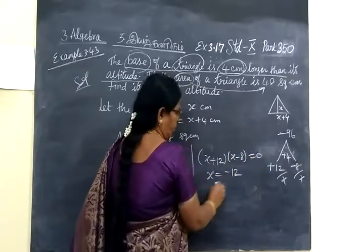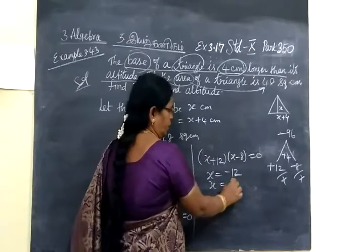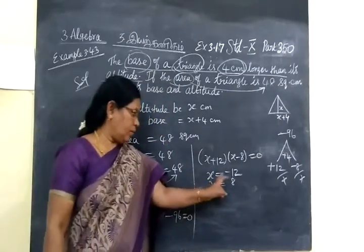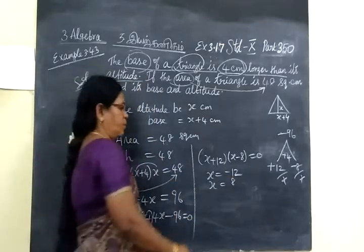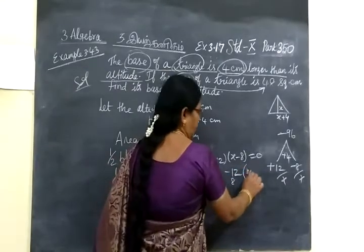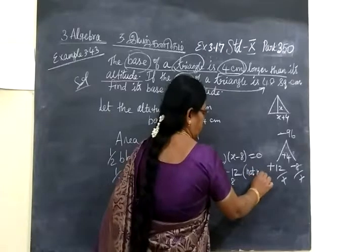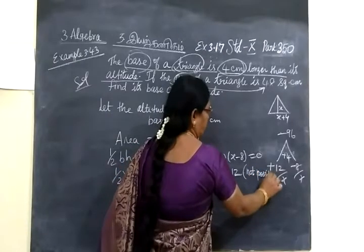This is equal to x equal to minus 12, then x equal to 8. But minus is not possible as we are dealing with measurement. So this one is not possible.